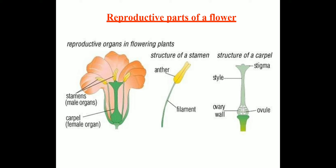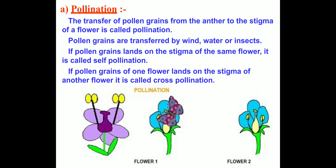Now coming to pollination. Pollination is the transfer of pollen grains from the anther to the stigma of a flower. Pollen grains are transferred by wind, water, or insects.